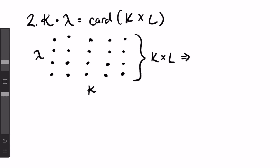Rule two, kappa times lambda equals the cardinality of k times l, where k times l is the cartesian product of k and l. Click on the card above to watch lesson four for a refresher on the cartesian product. This is basically the formula for the area of a rectangle. If we have one set along the x-axis and one set along the y-axis, the size of the rectangle they form is the product of their two sizes.